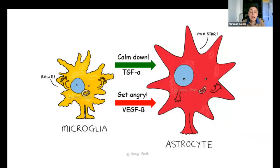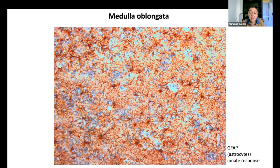Microglia are not the only cells involved in the innate immune response in the brain. Astrocytes also play a role as innate inflammatory cells. If you look at the astrocytes, you see they are massively activated again. This is a staining for GFAP — an antibody that many of you use always. This is the medulla oblongata, and you can see that the cell density is increased but there is also an overlap in the cell processes of these cells, indicating a florid reactive gliosis.